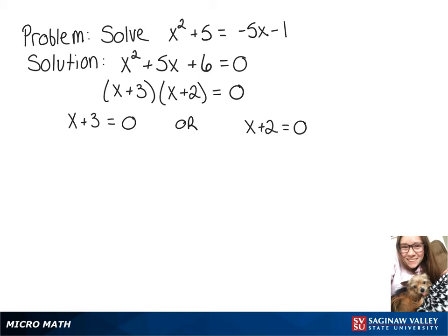Solving x plus 3 equals 0 would give us one possible solution of x equals negative 3. And solving x plus 2 equals 0 gives us our other solution, x equals negative 2.